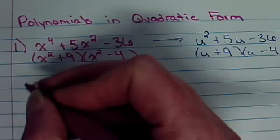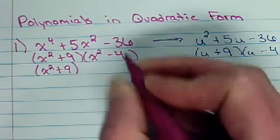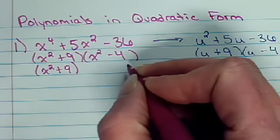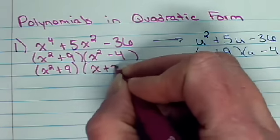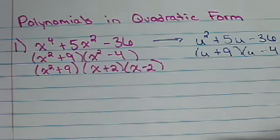Now, x squared plus 9 doesn't factor anymore, so it just comes down. But x squared minus 4 does. That factors into x plus 2 times x minus 2. It's that difference of 2 squared.